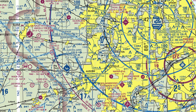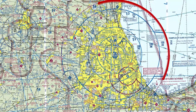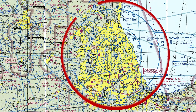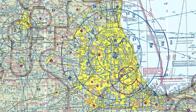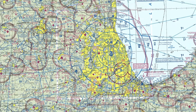As a reminder, there's a 30 nautical mile mode C ring around class Bravo airspace. The large faded magenta area is class Golf up to 700 feet and class Echo above that. Outside of the faded magenta, class Golf goes from the surface to 1,200 feet, with class Echo above that.